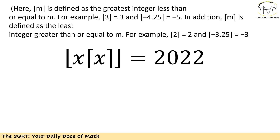Now let's talk about the ceiling. The ceiling of m is defined as the least integer greater than or equal to m. Obviously the ceiling of an integer like 2 is just that number. For a fraction, ceiling(-3.25) = -3, because -3 is the least integer greater than or equal to -3.25.